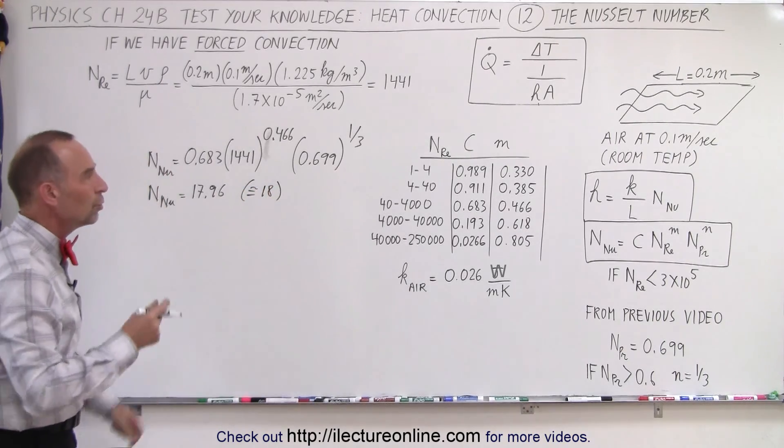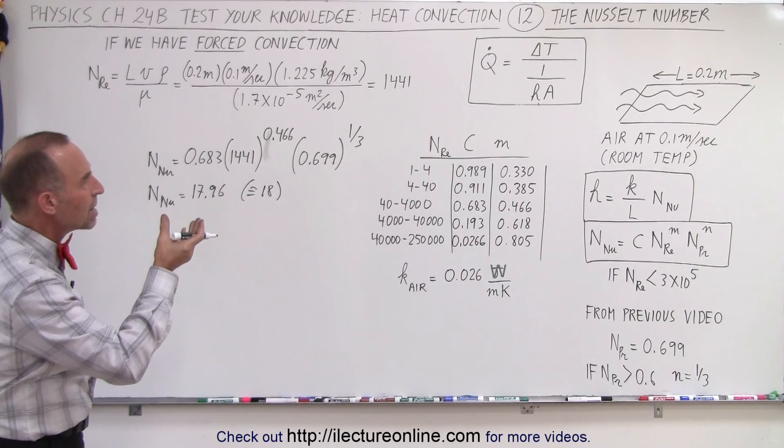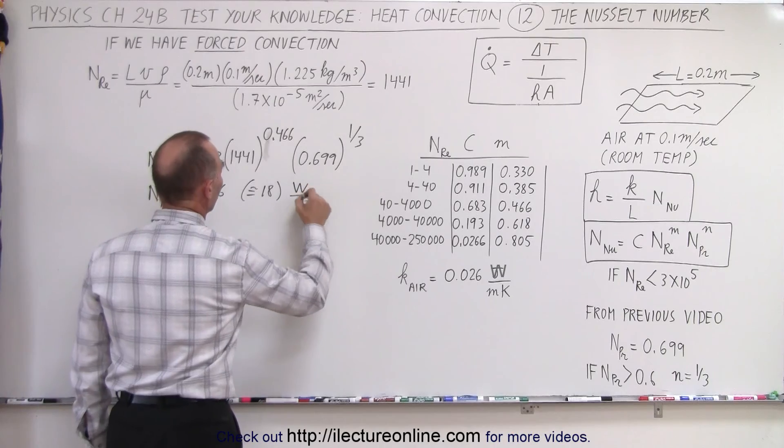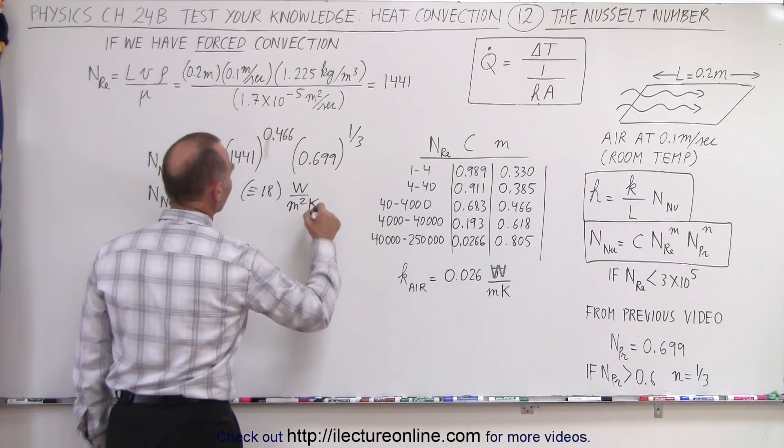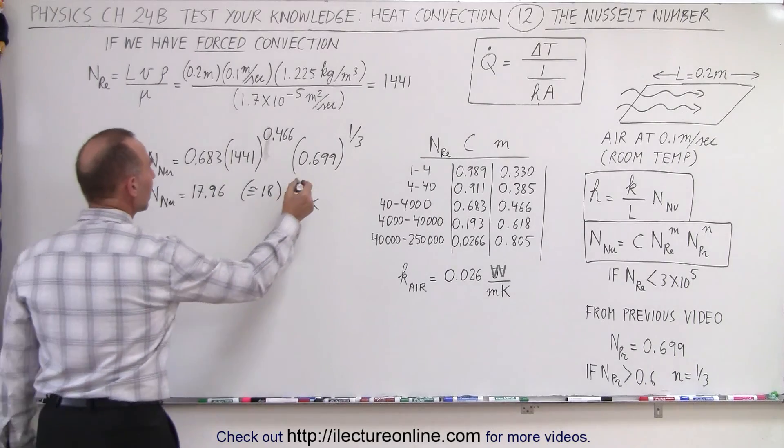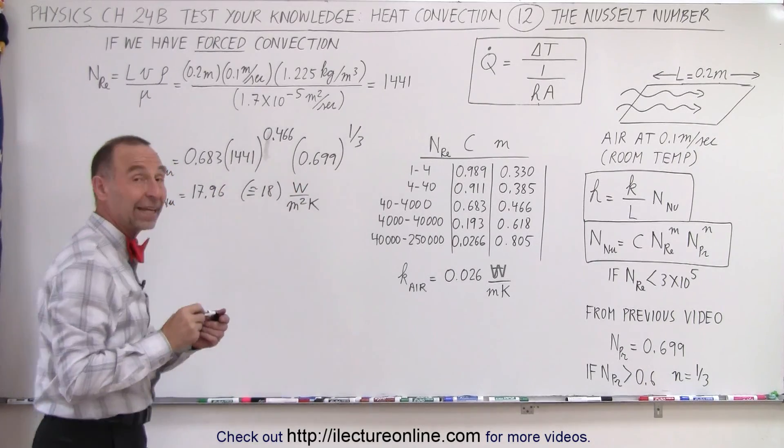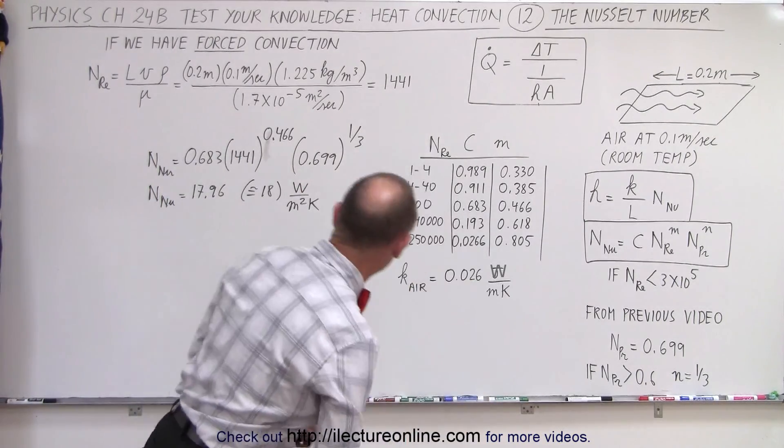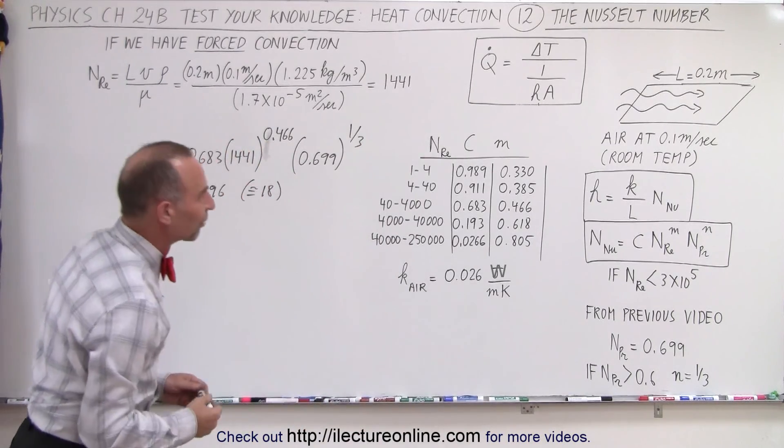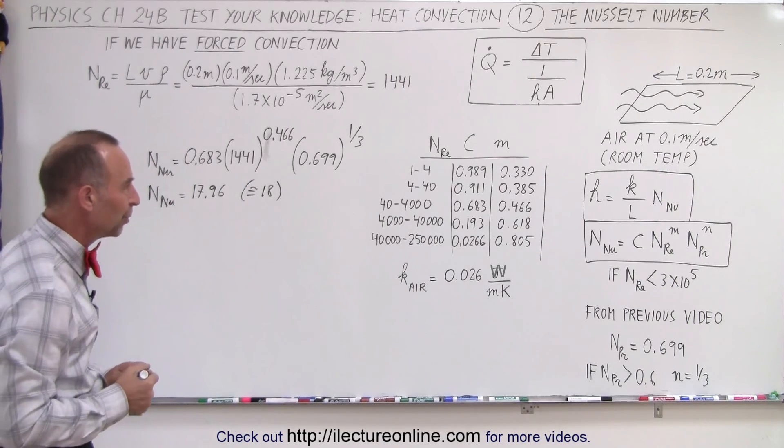Now, the units for that, remember, that's going to be watts per square meter times Kelvin. Joules per second per square meter per Kelvin would be the... oh, I'm getting ahead of myself. Nope, not yet the units for that, because those are the units for the transfer constant. So let's hang on to that for a moment.